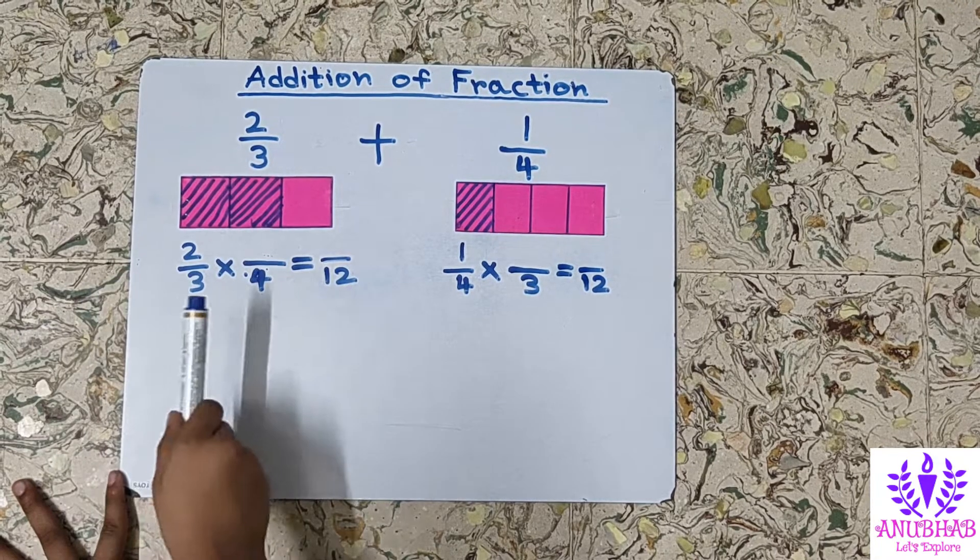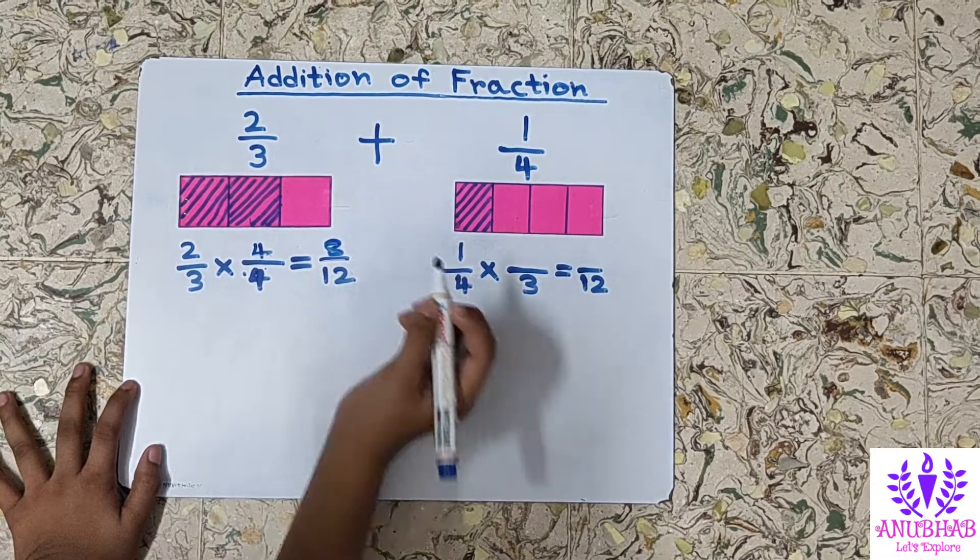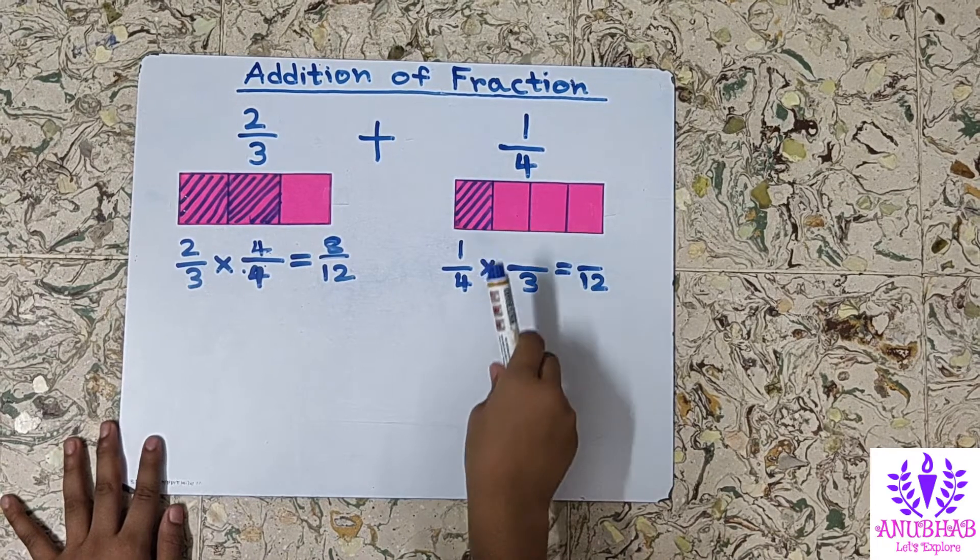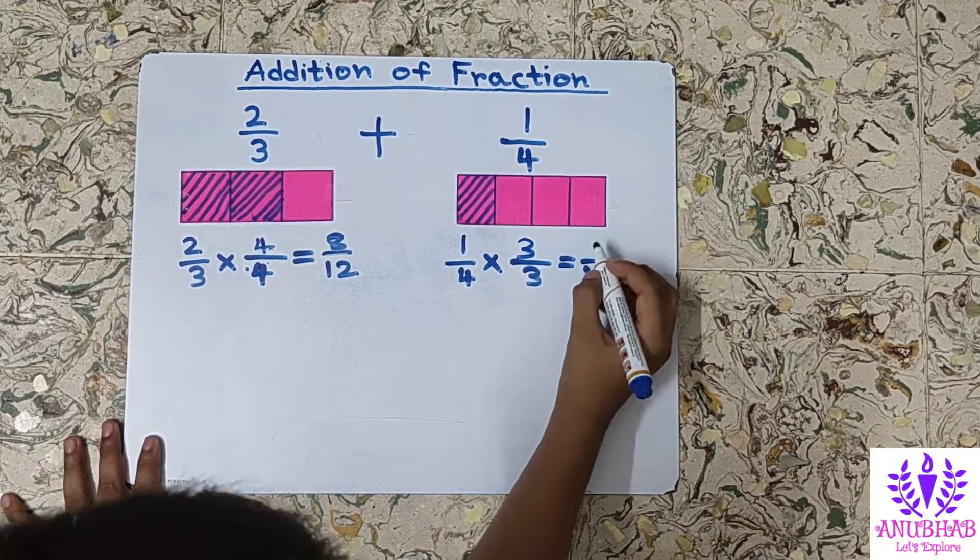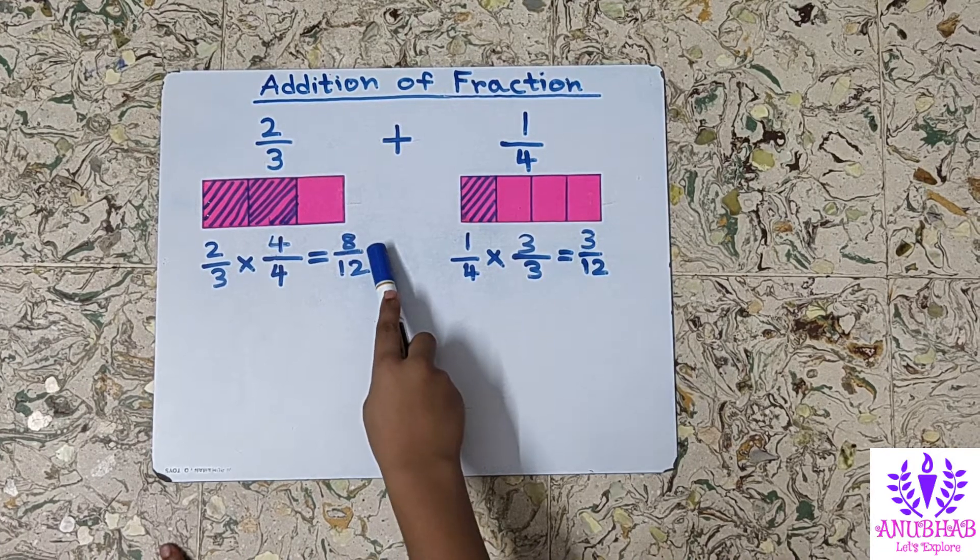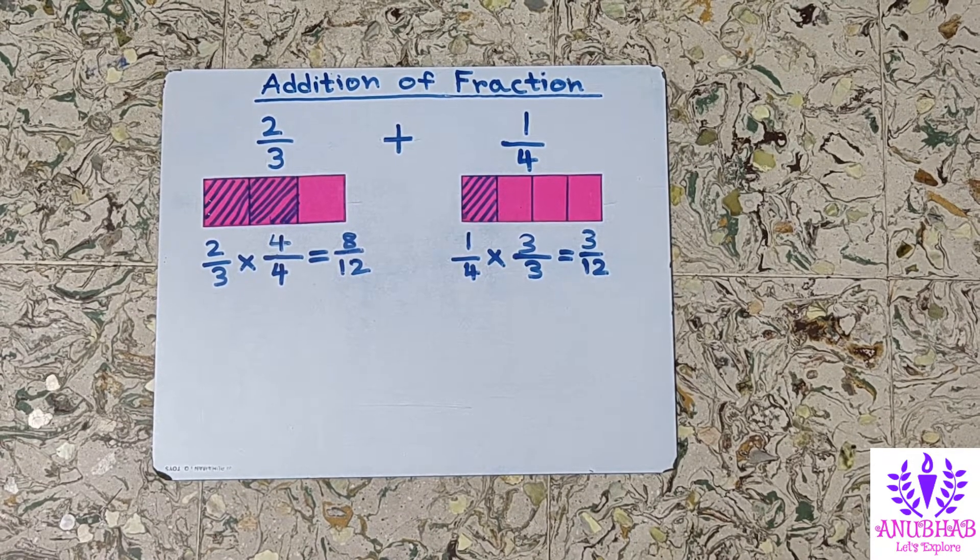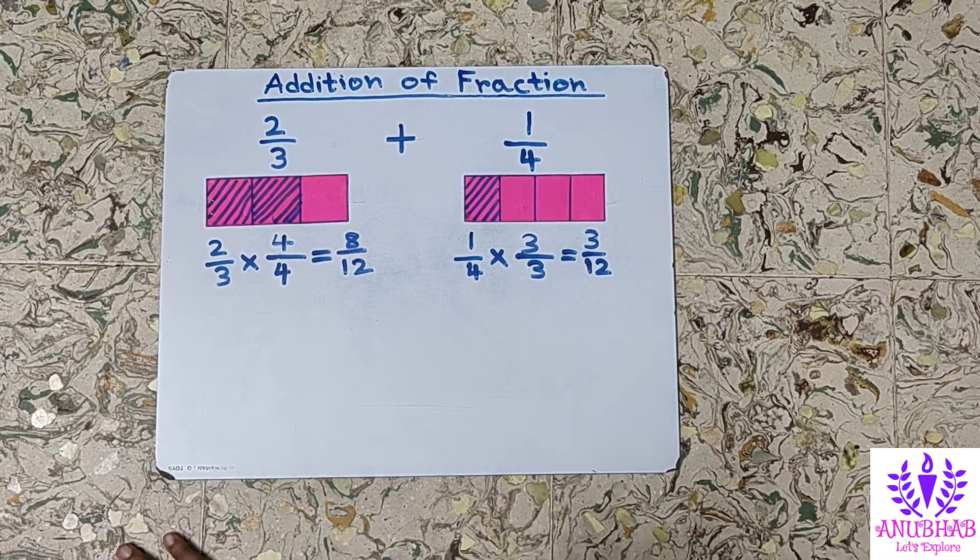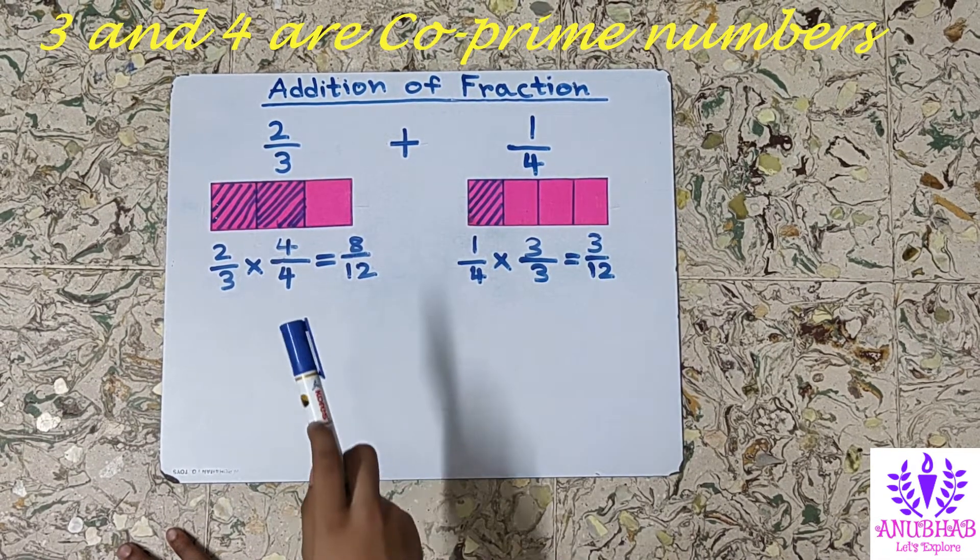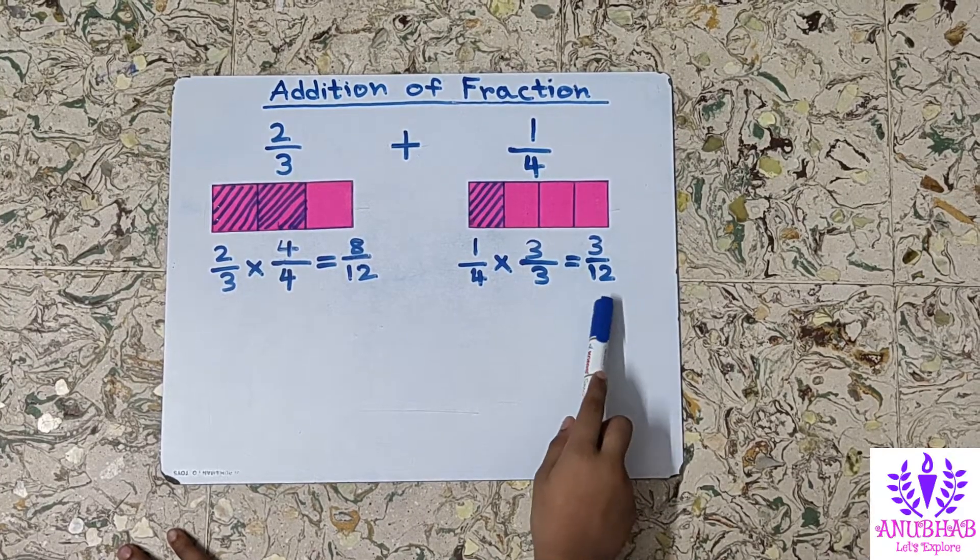We have to multiply 2 by 3 with 4, so 2 times 4 is 8 and 3 times 4 is 12, giving us 8 by 12. Now for 1 by 4, we are multiplying 4 with 3 and 1 with 3, giving us 3 by 12. We have got 8 by 12 and 3 by 12. 8 by 12 is equivalent to 2 by 3 and 3 by 12 is equivalent to 1 by 4. Do you know friends, we can make the denominators equal by another method. The method is LCM. These two numbers are coprime numbers, so their product is the LCM. We all know that 3 times 4 is 12, and here also we have got 12.